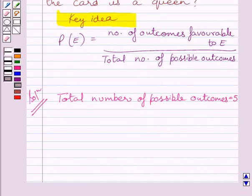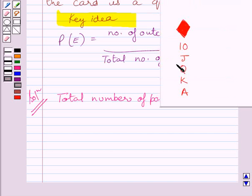Now, we have to find the probability that the card is the queen. Clearly, there is only one queen in these cards, and this queen can be chosen in only one way. So, the number of outcomes favorable to the queen is equal to one.